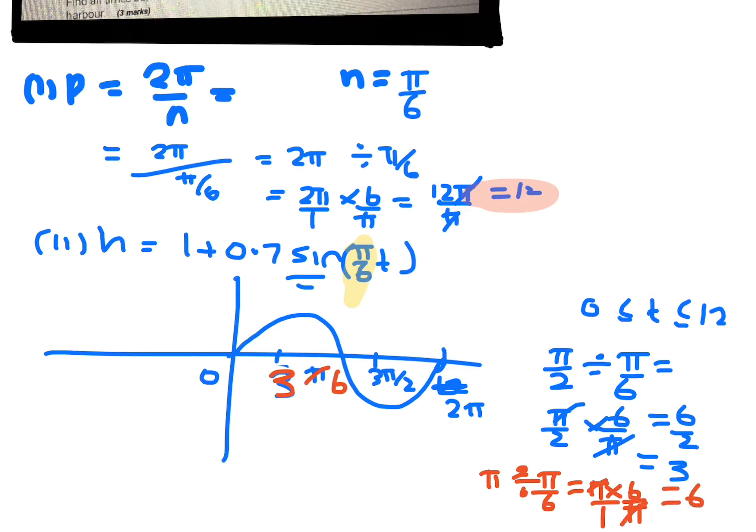So instead of having π there, it should be 6. And the 2π, we've already done that. That was 2π on π on 6, and that ended up being 12. So this one, the pattern 3, 6, that should be 9 there.